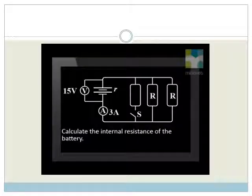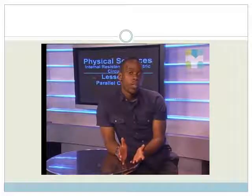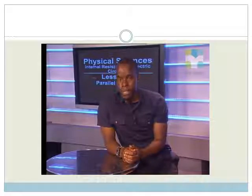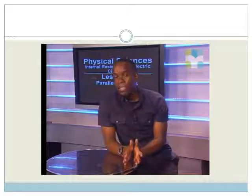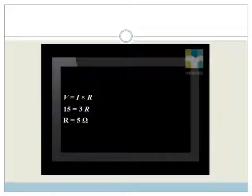Calculate the internal resistance of the battery. First we use the measured potential difference 15 volts to calculate the external resistance in the circuit. We substitute our values into the formula for Ohm's law.